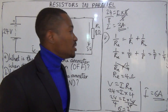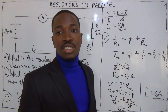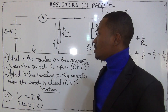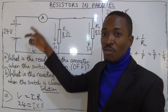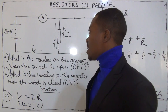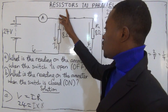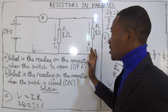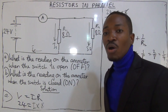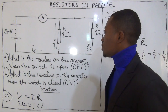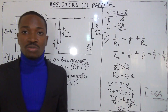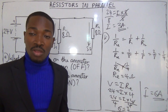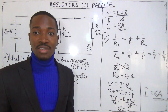The ammeter will read 6 amperes. From this you can see the total current flowing in the circuit is 6 amperes, and that 6 amperes is split into 3 amperes and 3 amperes, because I1 and I2 have equal resistors. That is the easy way to solve this problem. Thank you very much for watching — do have a nice day.